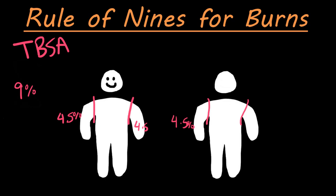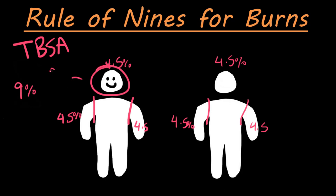So let's go ahead and write 4.5, 4.5 for the arms. And then let's explore the other areas. Same thing with the head — the anterior side is going to be 4.5%, so if only their anterior head has burns, it's going to be 4.5%. And then if their entire head is burned, we say 9%, because we have 4.5% plus 4.5% for each side of the head — so the entire head is going to be 9%.